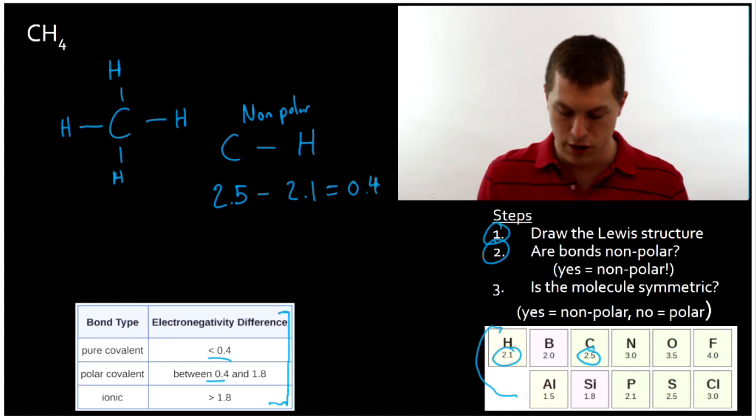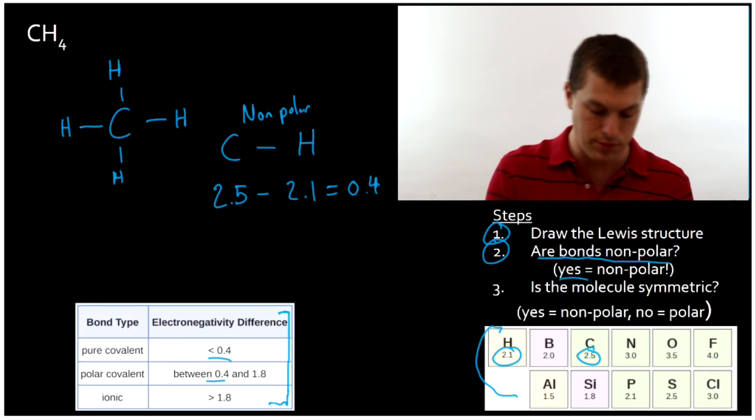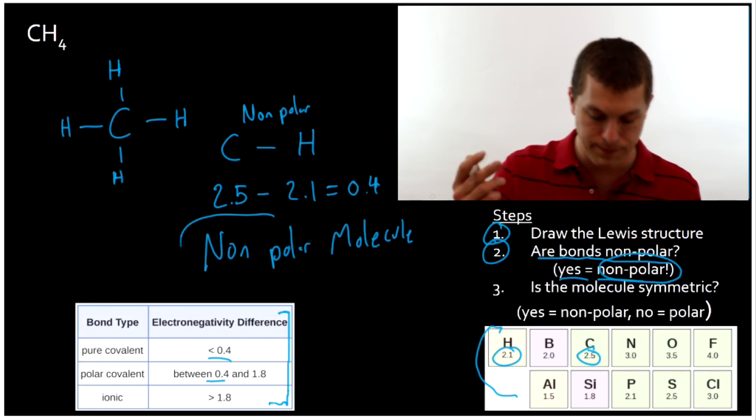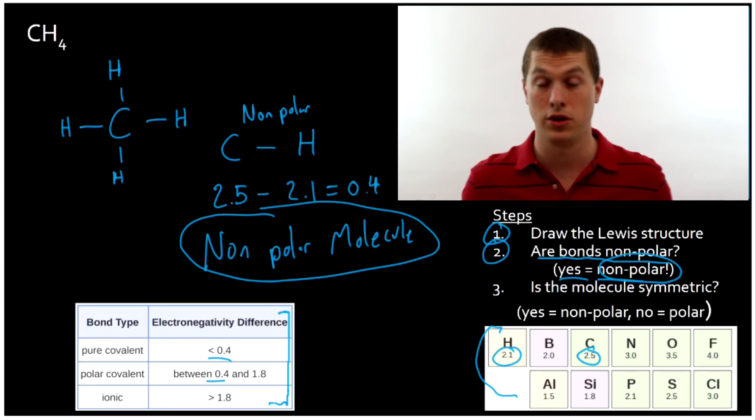Now, that turns out to be right on the line between pure covalent and polar covalent. CH is considered non-polar, even though it's right on the line. And it's actually a really important case to remember because all of our big organic molecules have a bunch of C and H bonds, and those are all non-polar. So all of our bonds are non-polar. That means my whole molecule is non-polar. So I have a non-polar molecule.